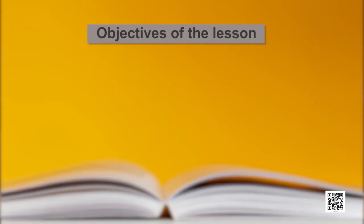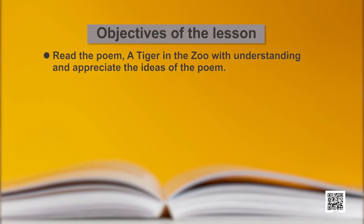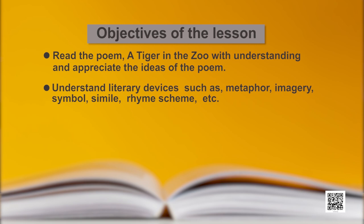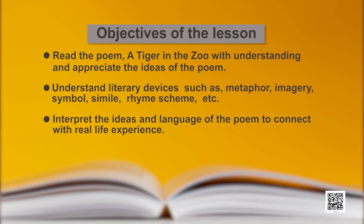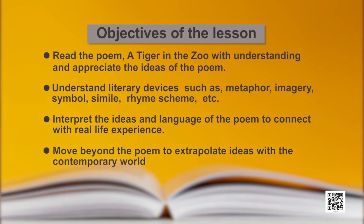Before we get into the poem, let us introduce the objectives of this lesson. At the end of this lesson, learners will be able to read the poem 'A Tiger in the Zoo' with understanding and appreciate the idea of the poem. Understand literary devices such as metaphor, imagery, symbol, simile, rhyme scheme, etc. Interpret the ideas and language of the poem to connect with real life experience. Move beyond the poem to extrapolate ideas with the contemporary world.